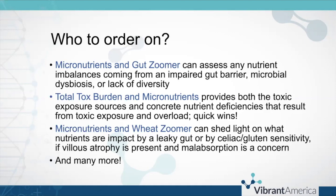A micronutrient and wheat zoomer is also a really classic bundle. This helps shed light on leaky gut, celiac, and gluten sensitivity. In celiac patients or patients headed towards celiac, where villus atrophy is present or starting to form, malabsorption is a concern. Any panel or test you order alongside a micronutrient test is fine — these are just some suggestions for ones you may not have considered.